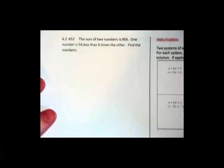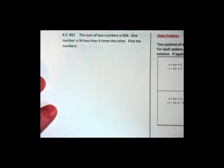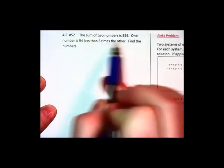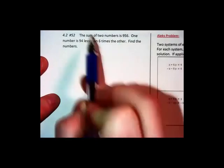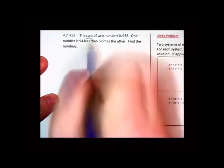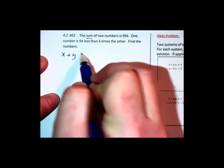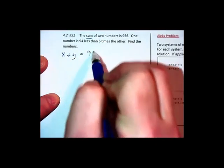Okay, now we have a word problem. Again, we're not going to fear here because we just start reading. We see what happens. The sum of two numbers is 956. Sum stands for addition. So they're going to add up to 956.